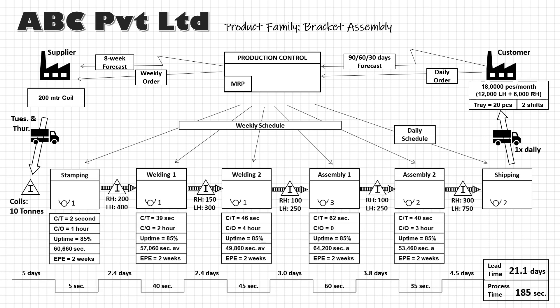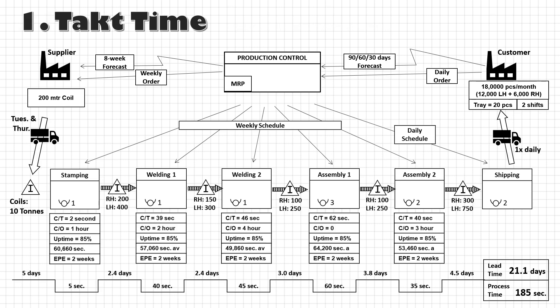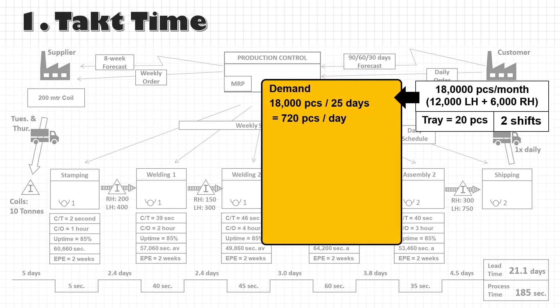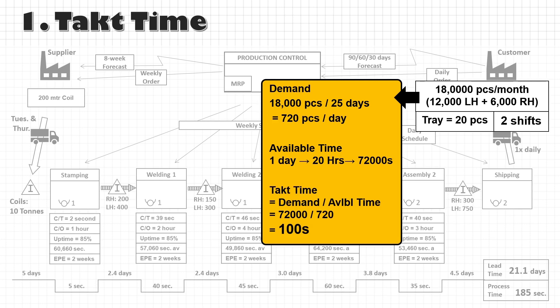Let us tackle this with our Lean principles, starting with takt time. The customer needs 18,000 parts per month or 720 parts a day. With 20 working hours available in a day, that is 72,000 seconds, so my takt time is roughly 100 seconds. That means ABC Limited needs to produce a part every 100 seconds in its manufacturing line. This number does not include any equipment downtime, changeover time, or time wasted during manufacturing of defective parts, so our cycle time has to be less than 100 seconds.